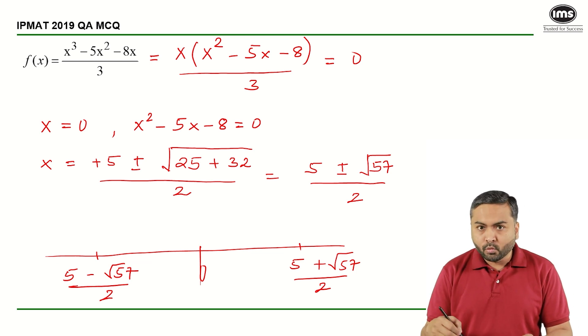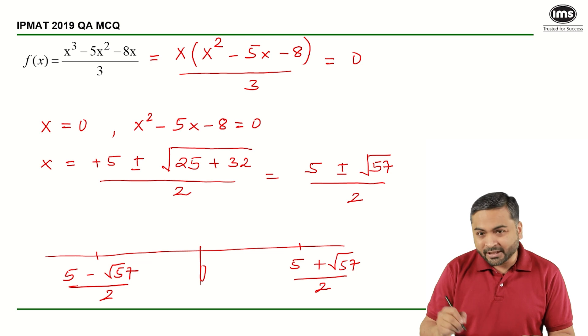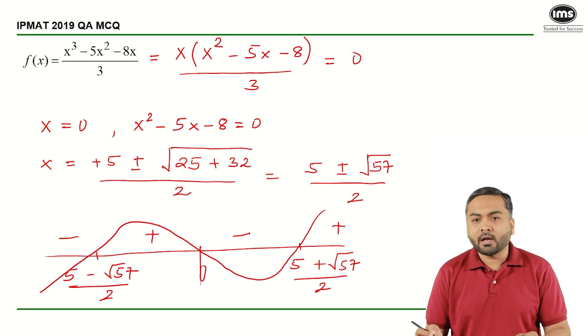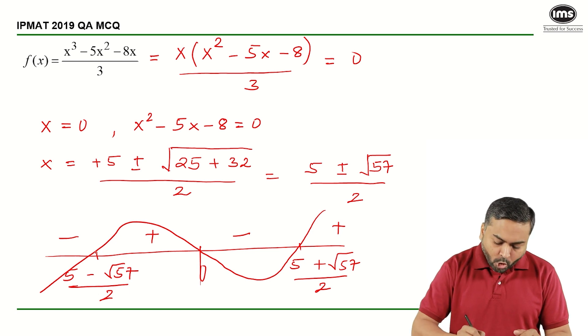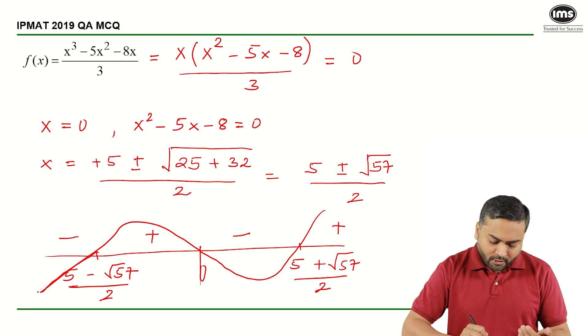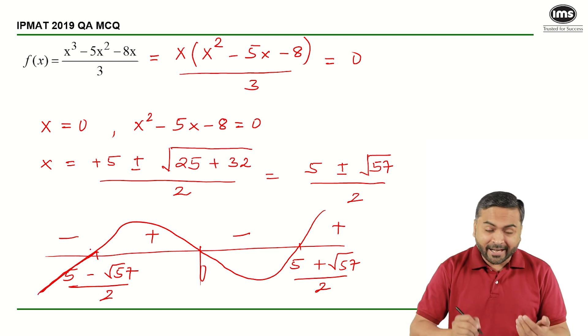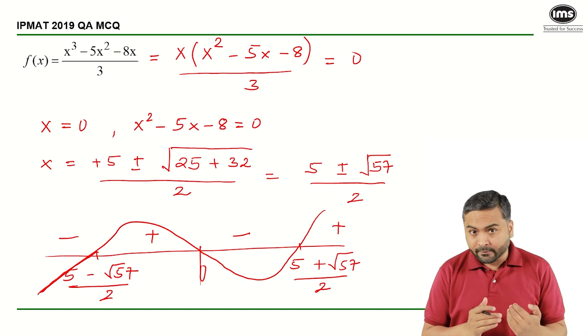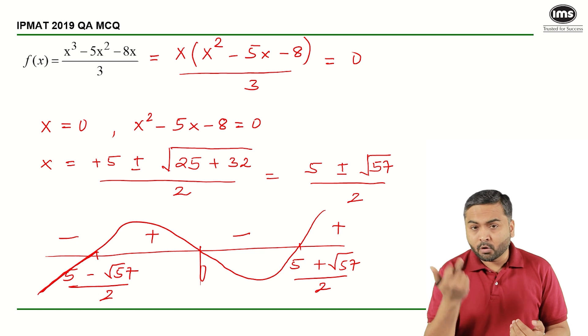And now I know that using the rules of inequality, on the extreme right-hand side for this particular equation, it will be positive, this will be negative, this will be positive, and this will be negative. So the graph would somewhat look like this. You can see that it is monotonically decreasing, it is negative and monotonically—or it monotonically increasing here for the negative values of x from minus infinity to 5 minus root 57 by 2. It is negative and it is monotonically increasing.